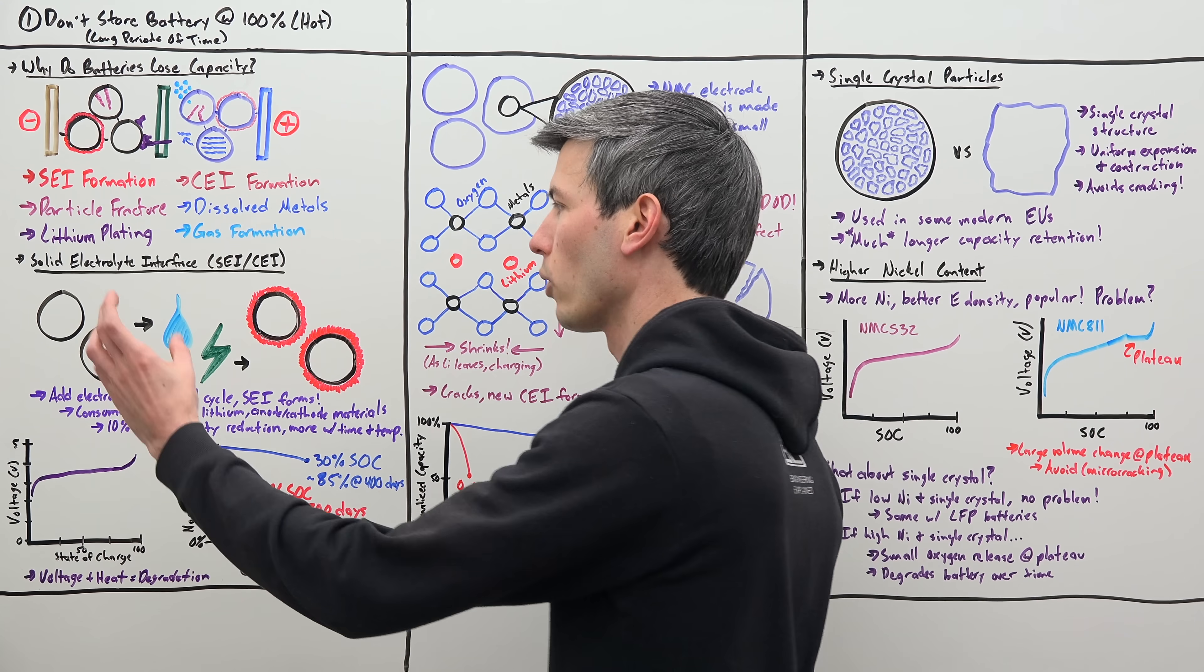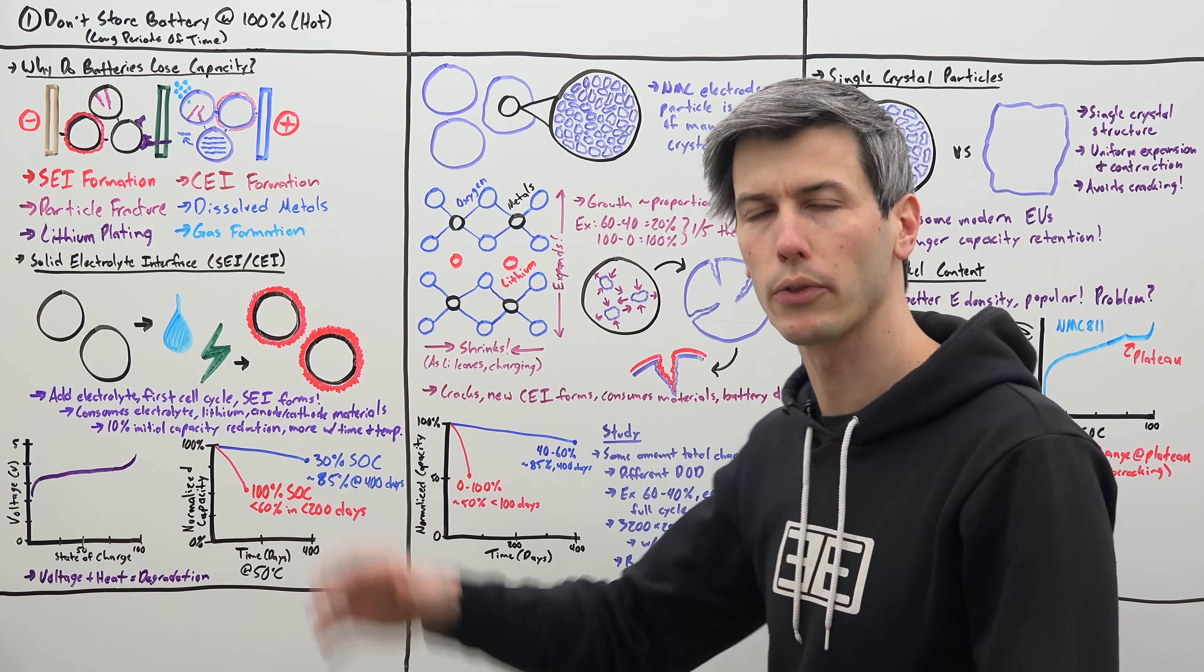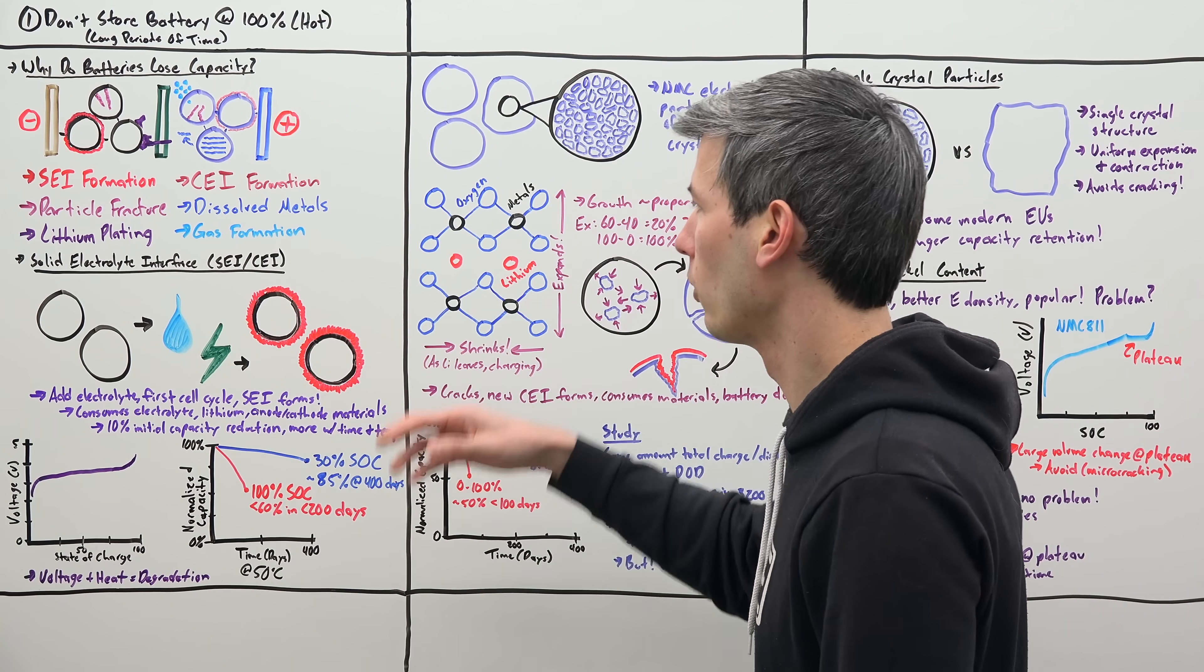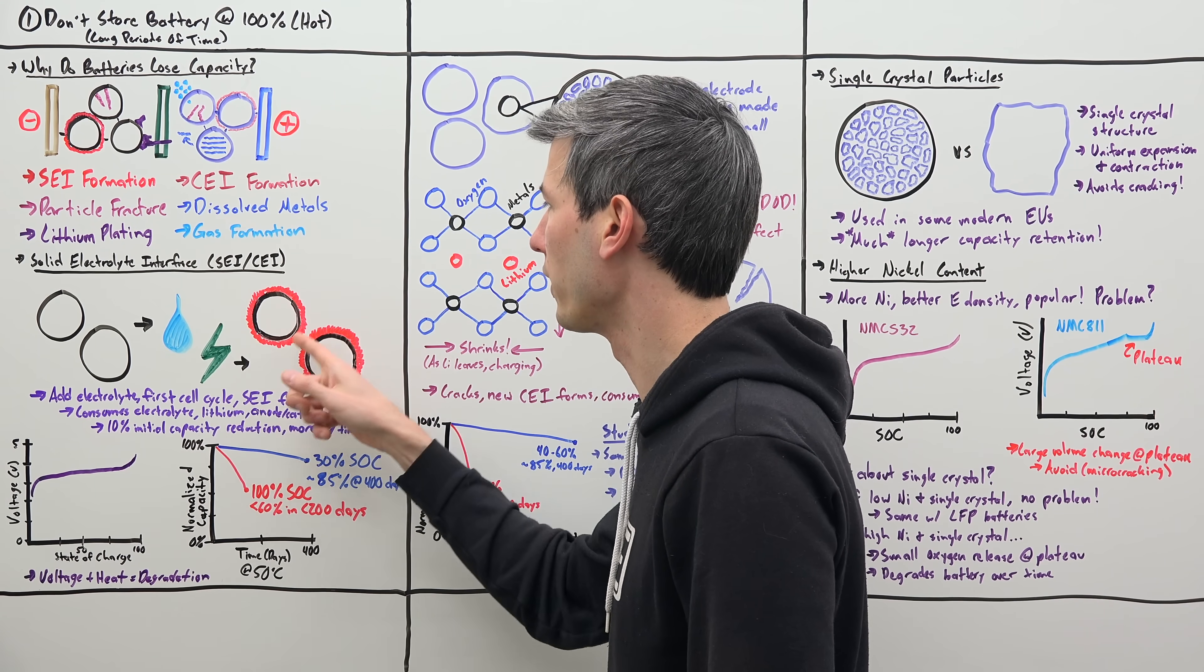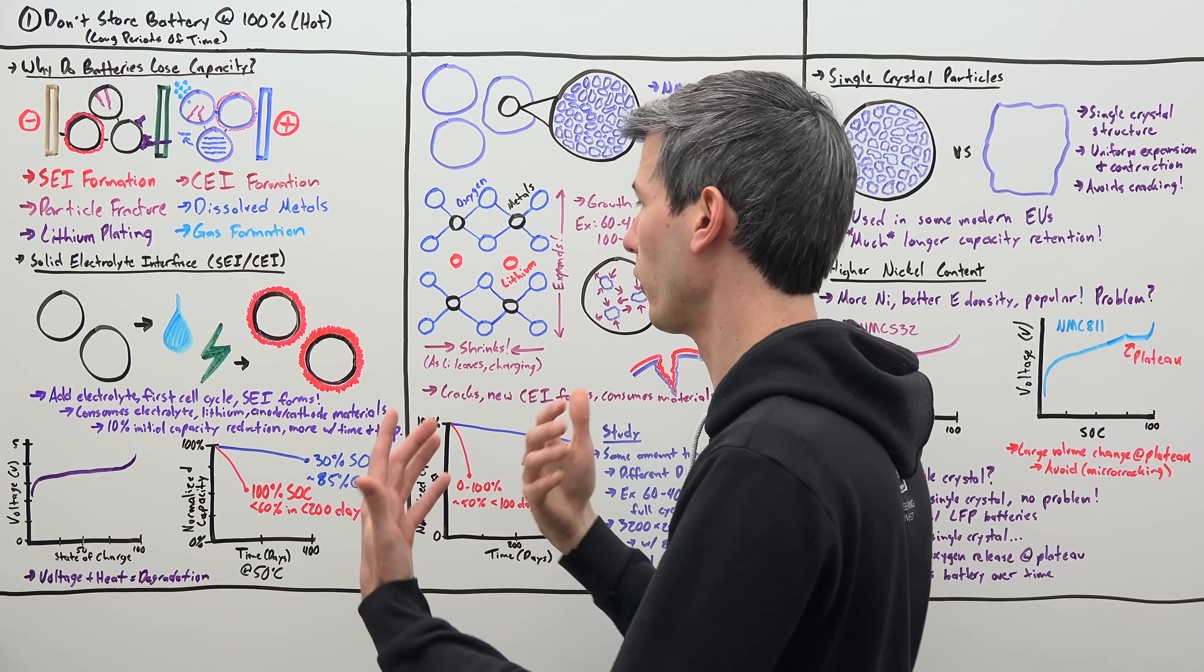Very simply, what happens when you're originally creating the battery and you add the liquid electrolyte and you put it through its very first charge cycle, this solid electrolyte interface forms on these particles. And this formation consumes the electrolyte, it consumes lithium, it consumes materials from the cathode and anode,